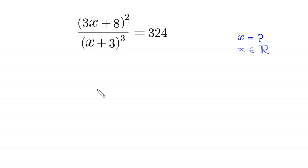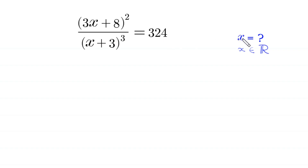Hello everyone, welcome to how to solve this very nice algebra equation: (3x + 8)² divided by (x + 3)³ is equal to 324. Our job is to find all possible values of x.